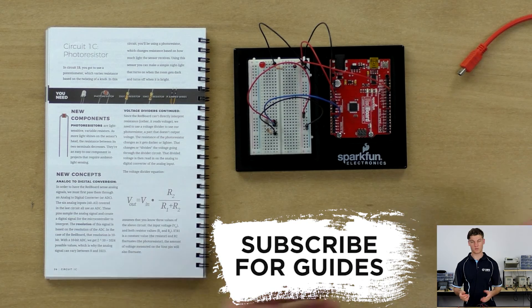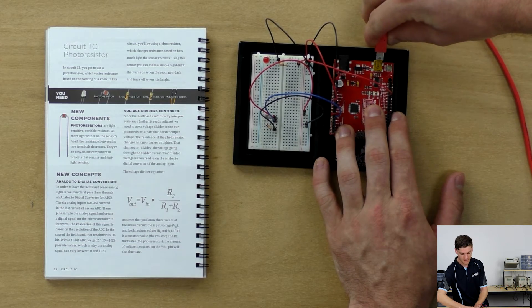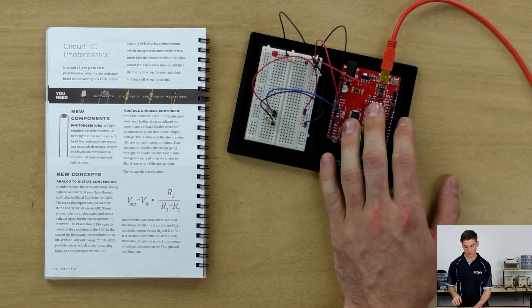Now that that connection is established we can actually write the code that will let us activate this nightlight. So we'll connect it up and open the Arduino IDE.